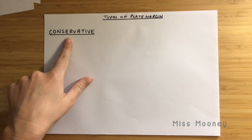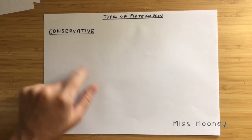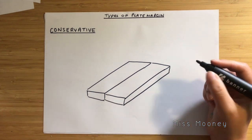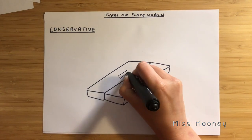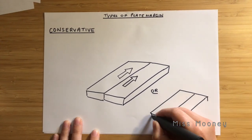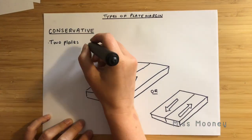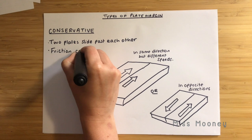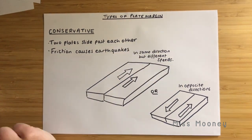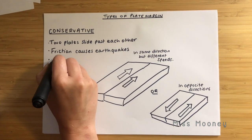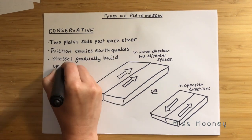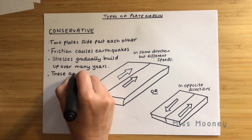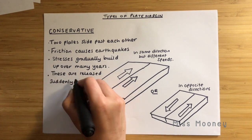The next plate margin is a conservative plate margin. At a conservative margin, two plates are either sliding past each other in the same direction at two different speeds, or sliding past each other in different directions. As they move past each other, stress energy builds up as the plates snag and grind against one another. The energy is eventually released, sending shock waves through the Earth's crust — we know these shock waves as earthquakes.